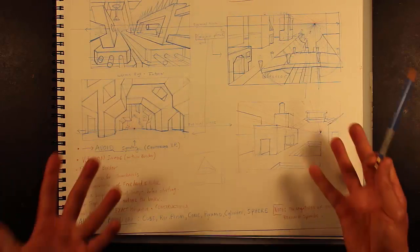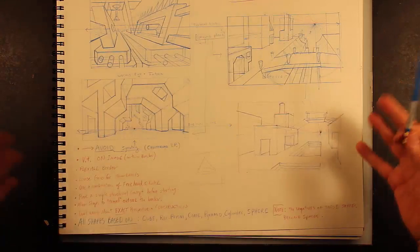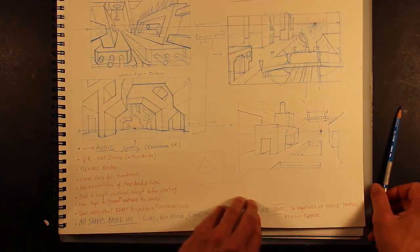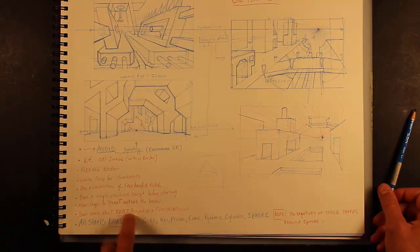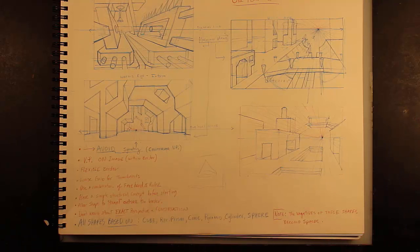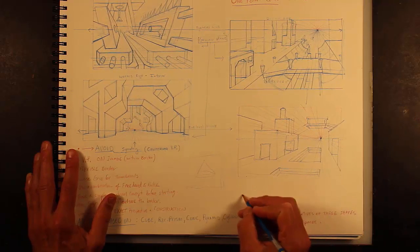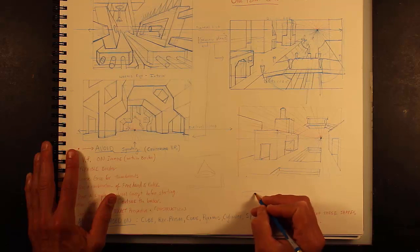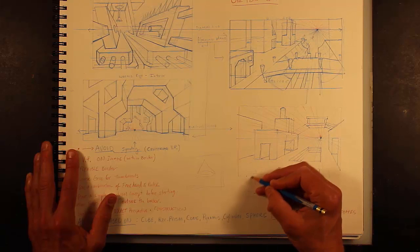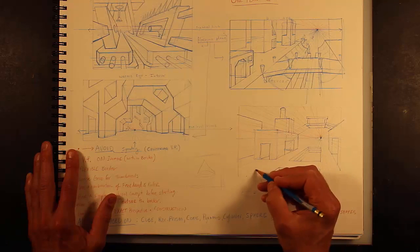It helps to bring us into the image, makes us feel like there's a space beyond the image. It's really important. And don't worry about exact perspective and construction. For example, if you're drawing a cone, just approximate the ellipse and then draw the cone.